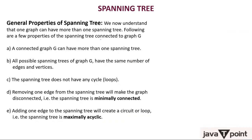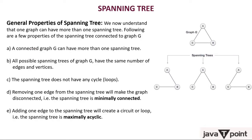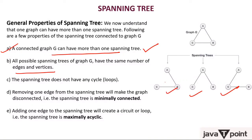Now let's look at the general properties of spanning trees. First, a connected graph G can have more than one spanning tree. Second, all possible spanning trees of a graph have the same number of edges and vertices — it cannot be that some spanning tree has different edges than another.